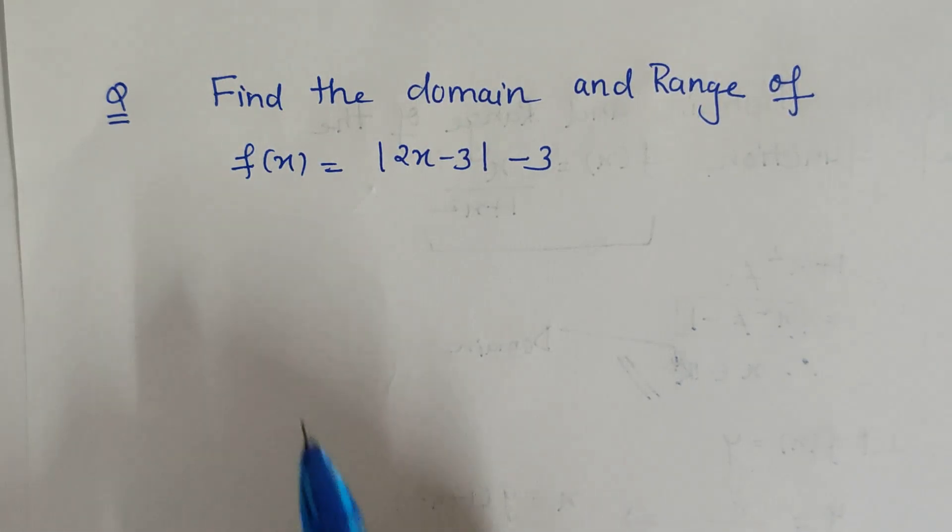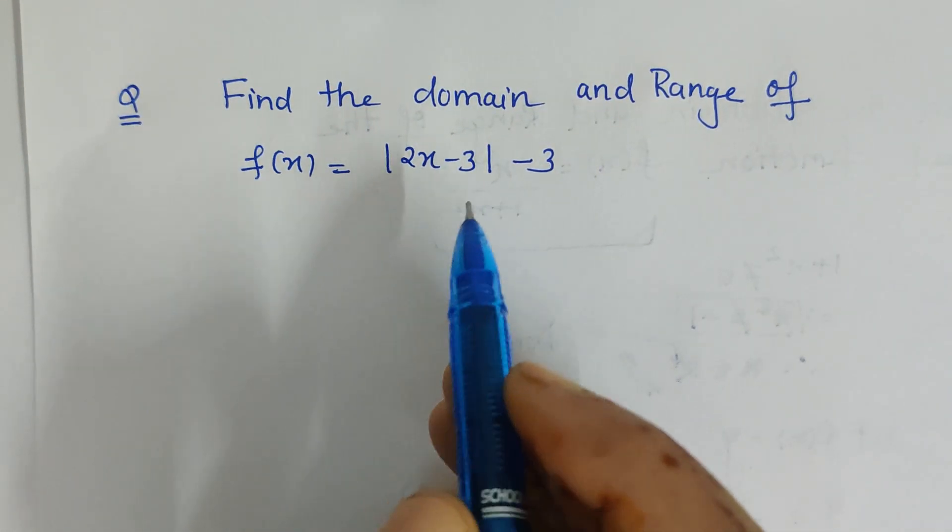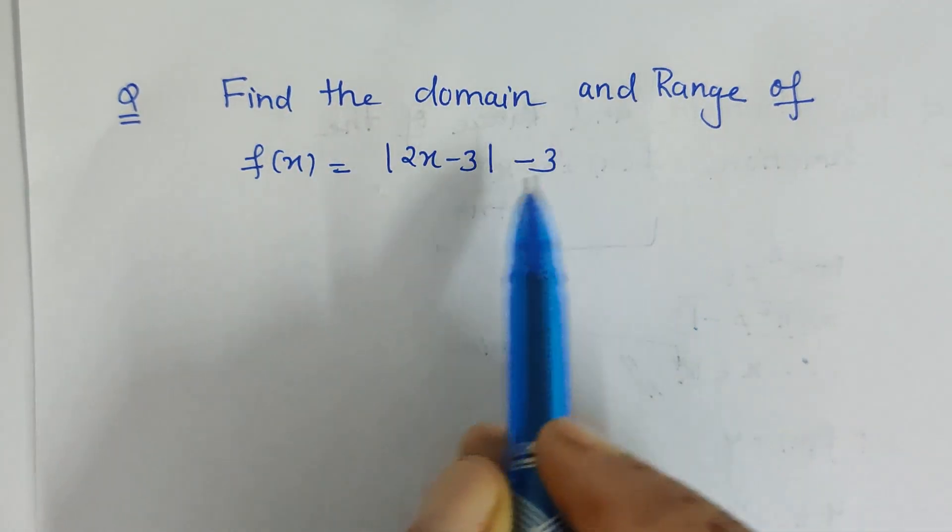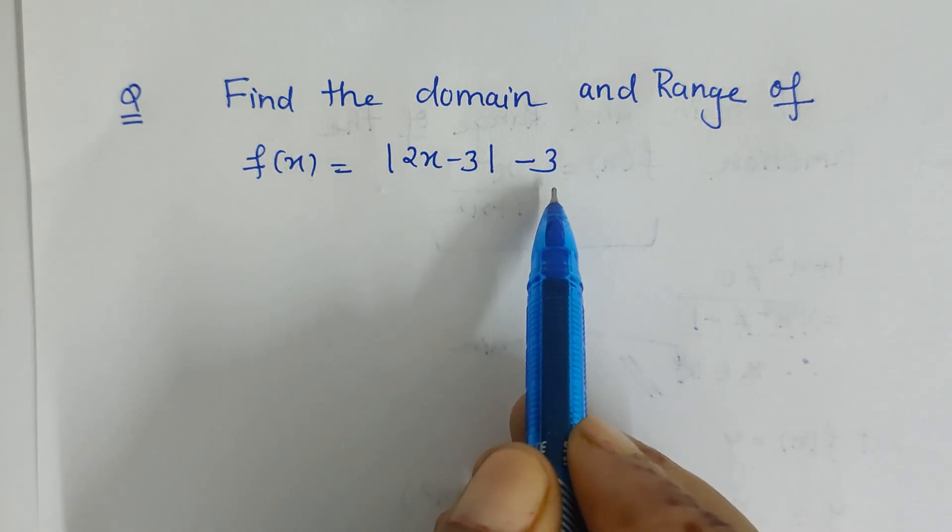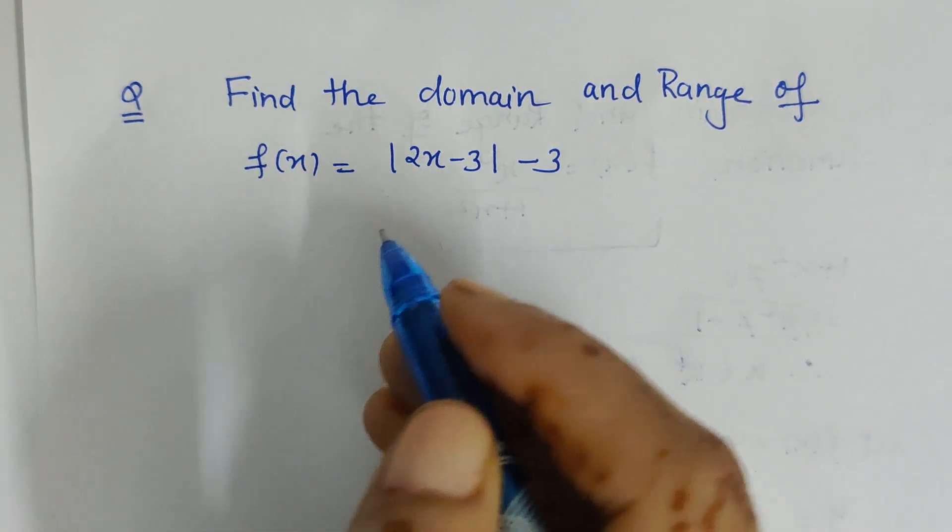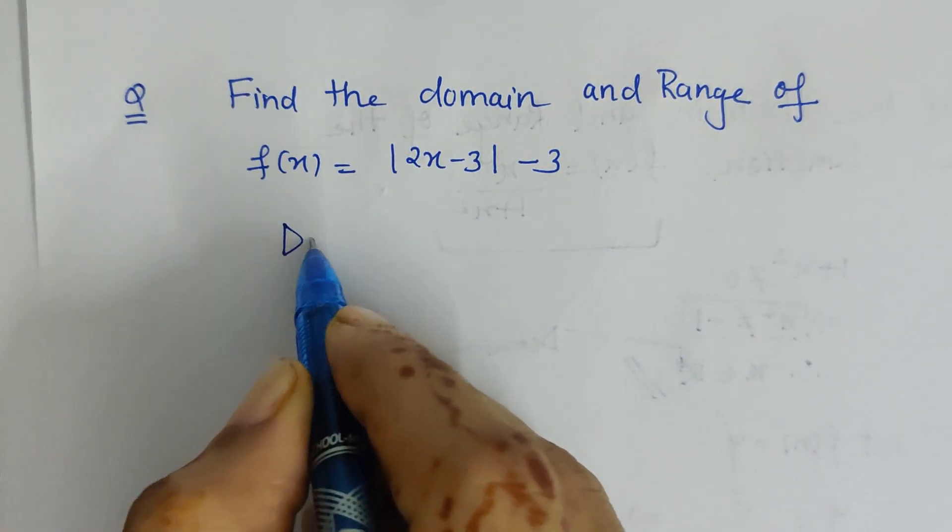Hello friends, I'm again with one more question on domain and range of the function. Here the function is |2x - 3| - 3. So here first we will find the domain.